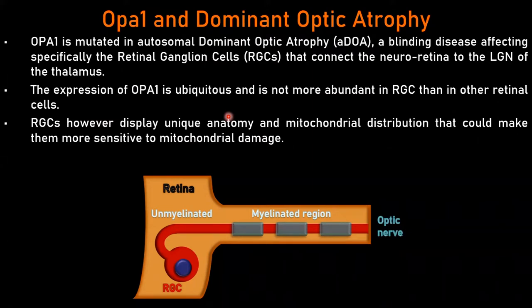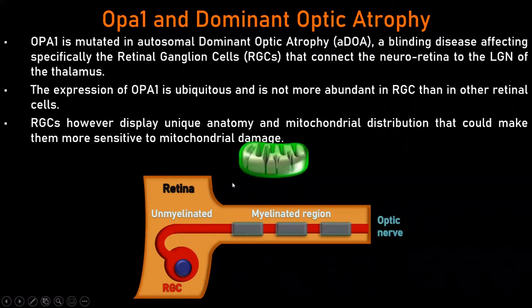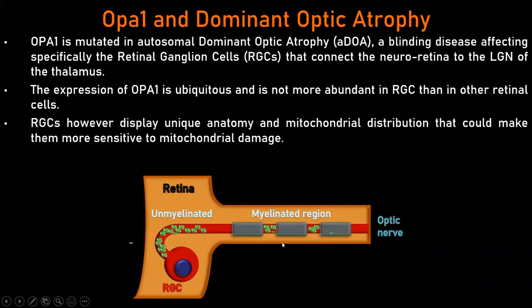There is a big question here: why, notwithstanding the fact that OPA1 is ubiquitously expressed and is not more abundant in retinal ganglion cells than in other retinal cells, we have a problem that specifically affects these cells, at least leading to the clinical presentation. We thought in the beginning that one of the possibilities is that the unique anatomy of these cells might be the culprit.